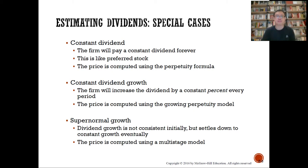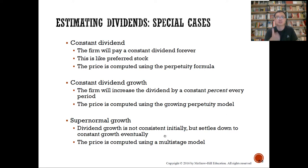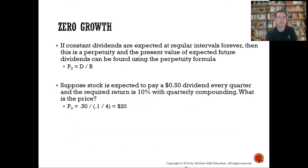If the dividend payments are not equal and not growing at a constant rate, we call that supernormal growth. For supernormal growth, we use a multi-stage model, which simply means calculating the present value of each dividend and summing them up. For zero growth — constant dividends expected at regular intervals forever — this is a perpetuity, and the present value of expected future dividends can be found using the perpetuity formula.